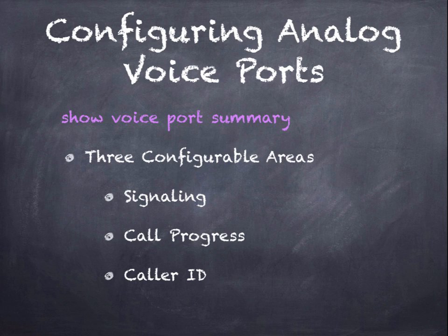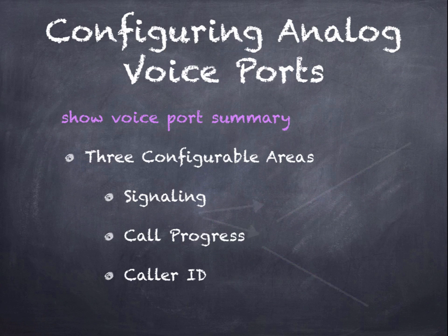When we configure analog voice ports, we can begin with the 'show voice port summary' command, which will list our voice ports. They're also listed in 'show run', but this calls them out specifically. There are three configurable areas for an analog voice port: the type of signaling, the call progress, and the caller ID.